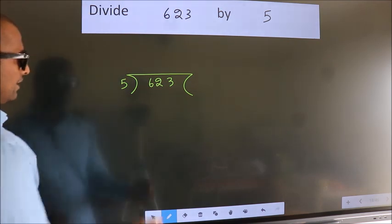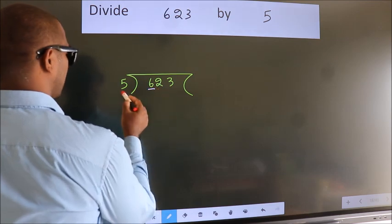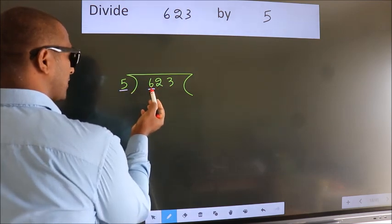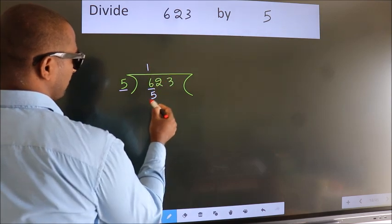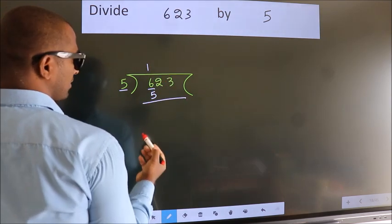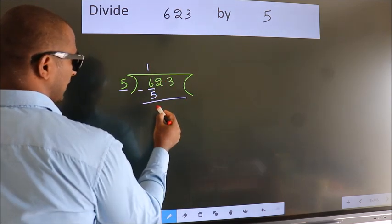Next. Here we have 6, here 5. A number close to 6 in 5 table is 5 once 5. Now we should subtract. We get 1.